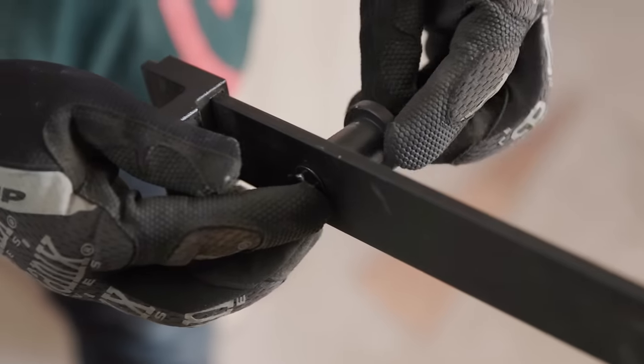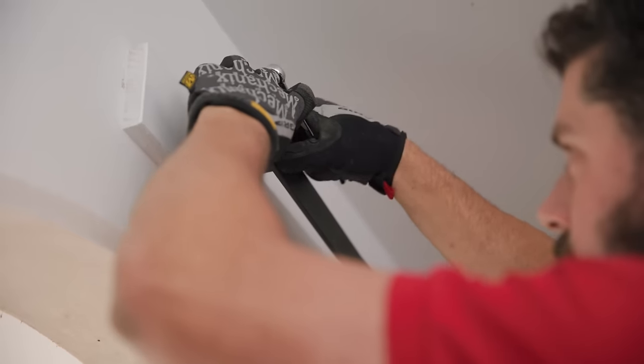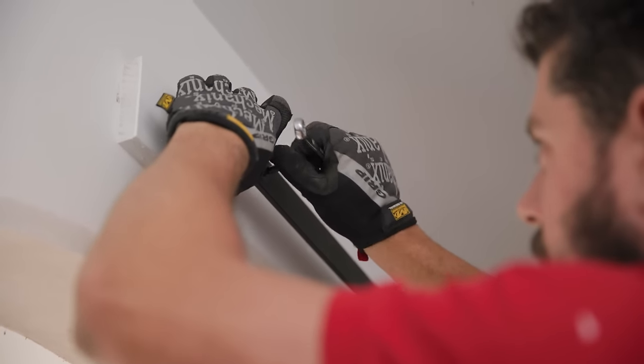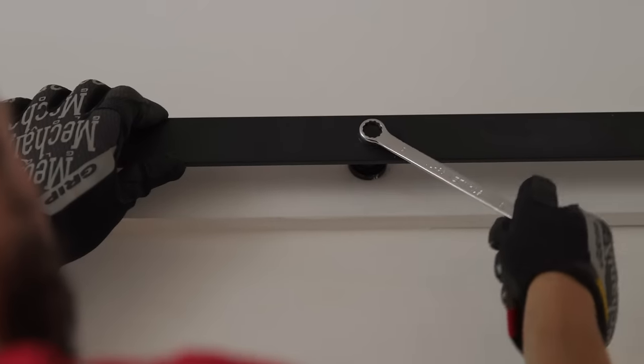Using the included fixings, attach the track, check that it's level and then tighten the bolts. Slide a stopper onto each end and tighten with an Allen key.